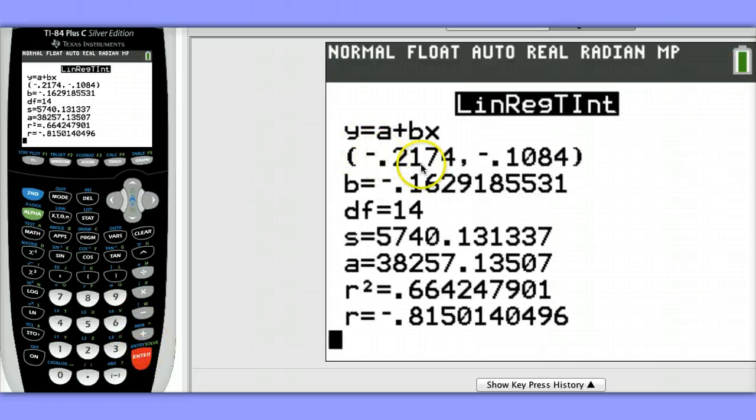Here, we see the lower bound and the upper bound on our confidence interval. Since this is a 90% confidence interval, we would say we are 90% confident that the true slope of the regression line is between negative .28 and negative .11. This means that the price in dollars goes down somewhere between 11 and 22 cents on average per extra mile driven.